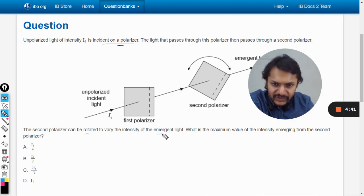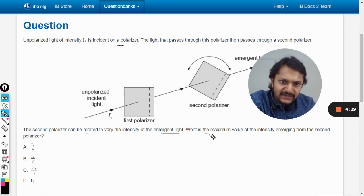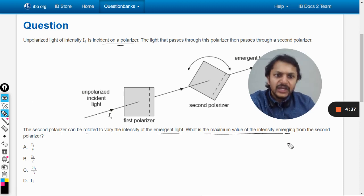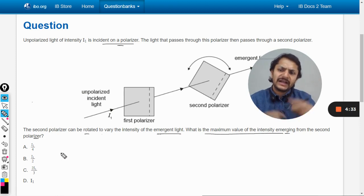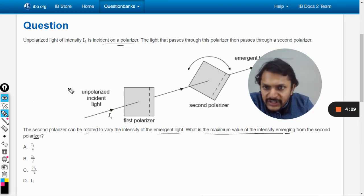What is the maximum value of intensity emerging from the second polarizer? You have to find the maximum intensity in terms of I₁. First of all, as we have seen in many questions earlier, this is how we show unpolarized light.